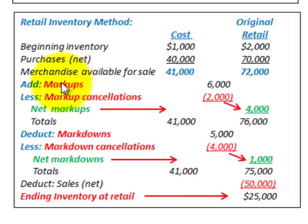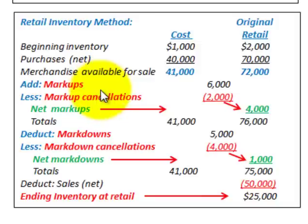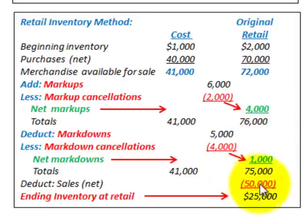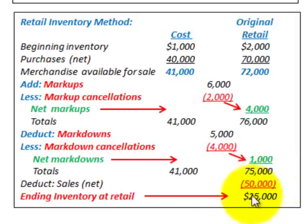The key takeaway is where markups and markdowns figure in when determining ending inventory. You start with beginning inventory, add purchases to get merchandise available for sale, apply net markups and net markdowns, then deduct sales for the period to arrive at your ending inventory at retail.